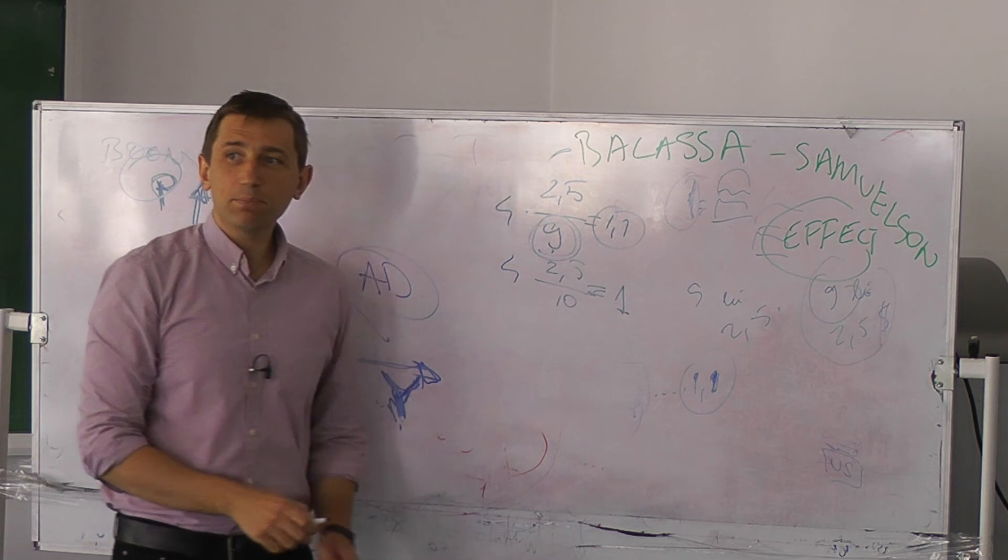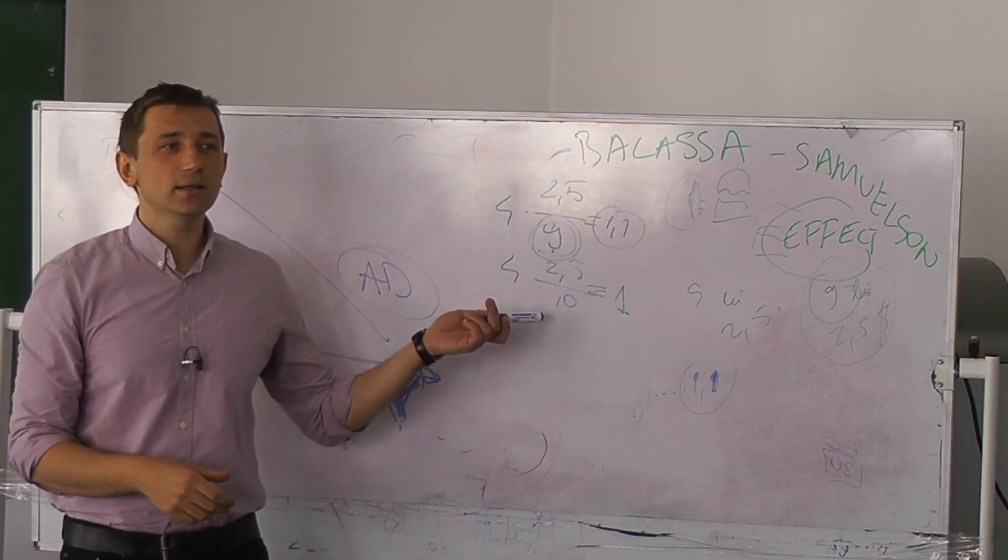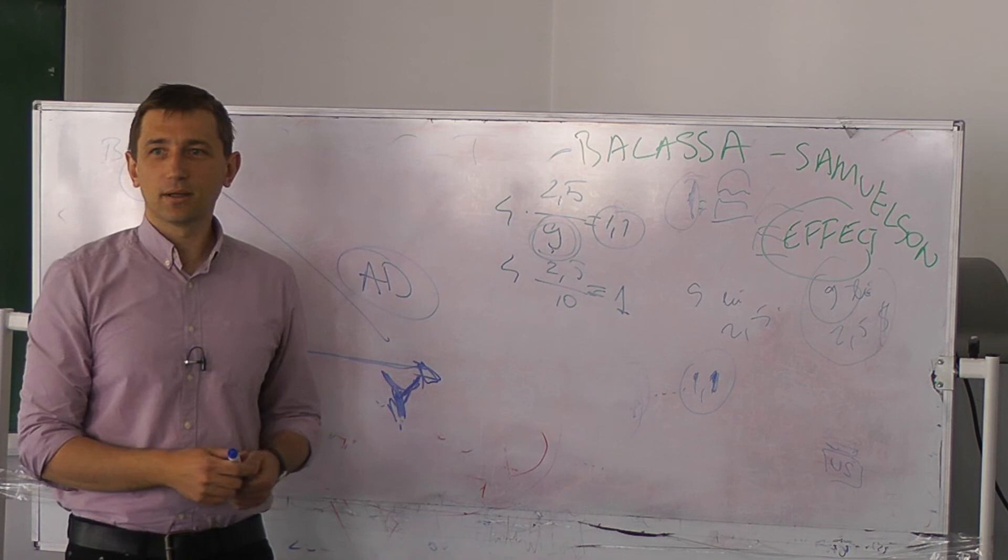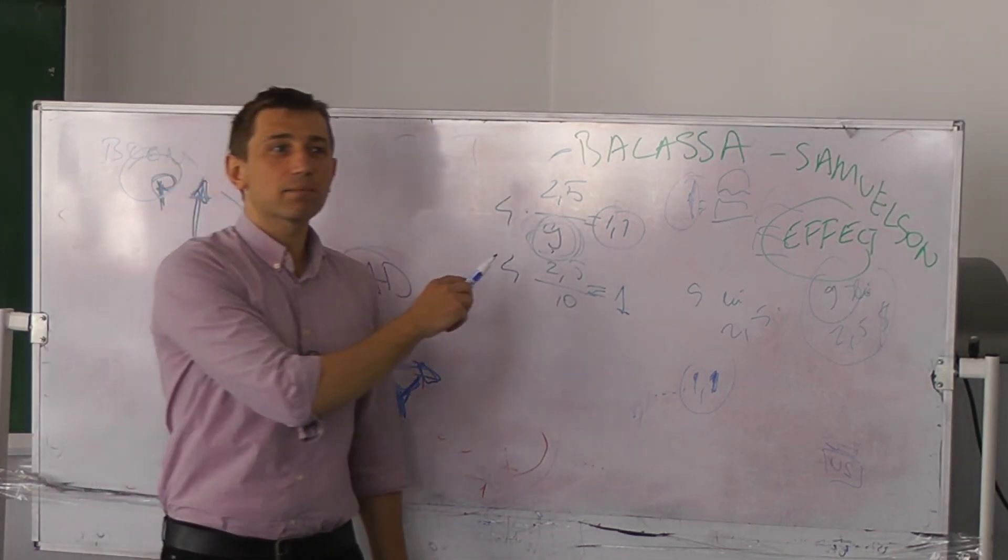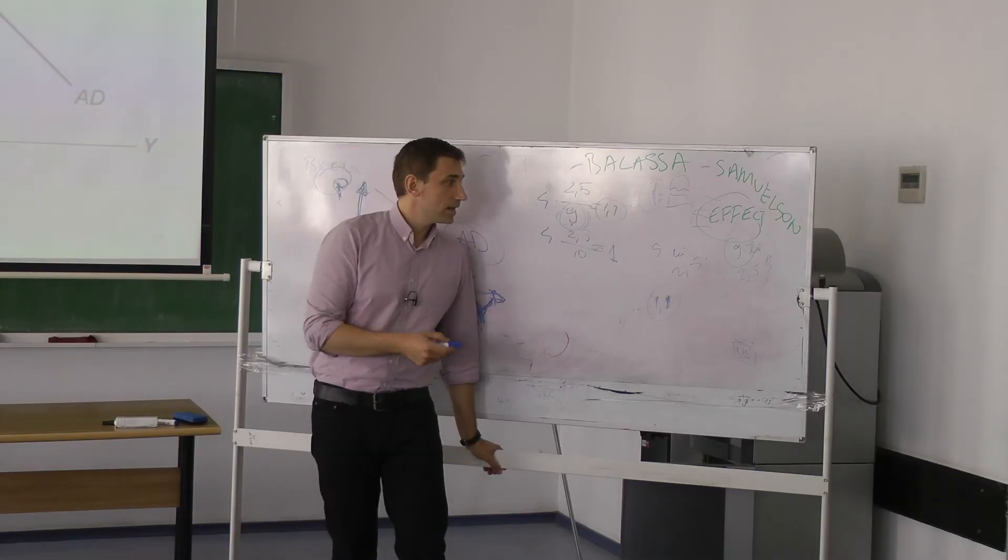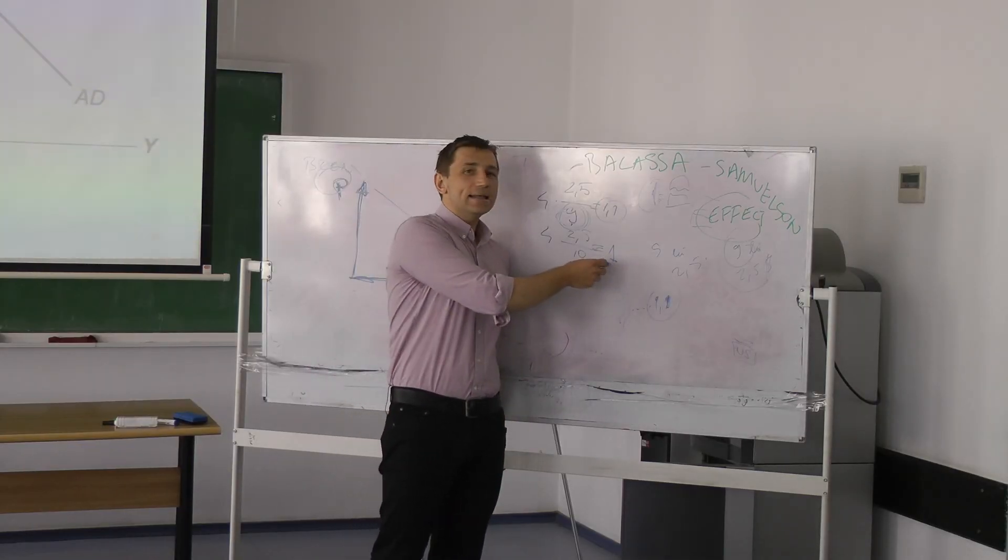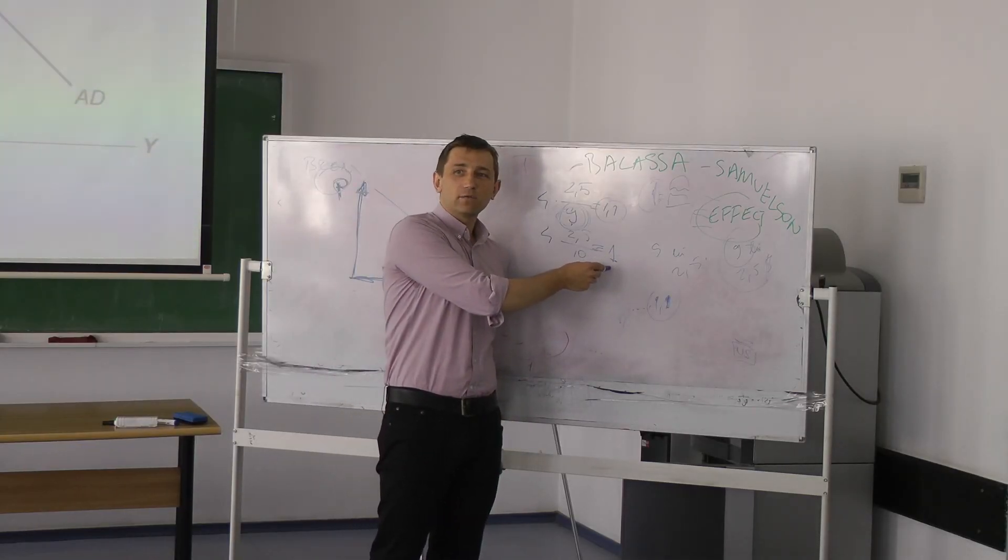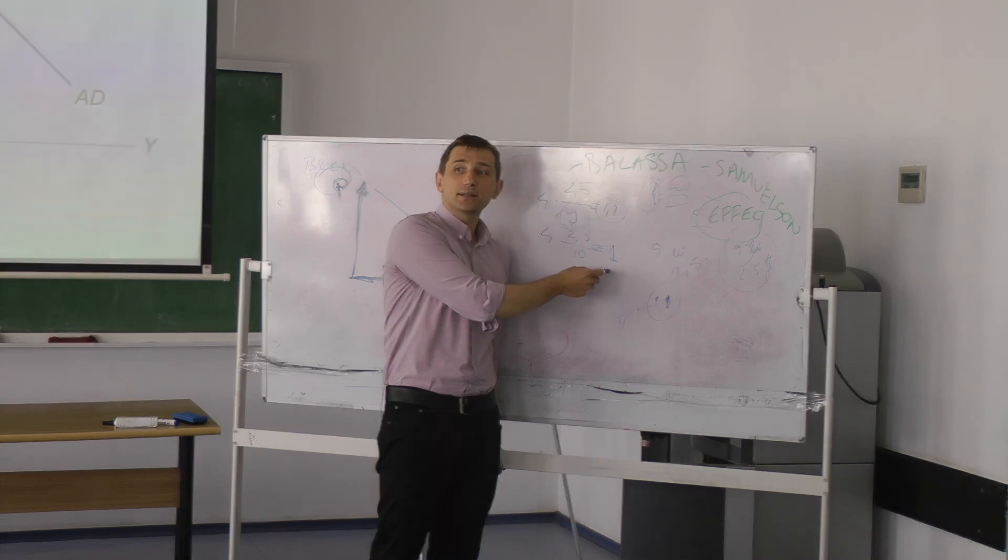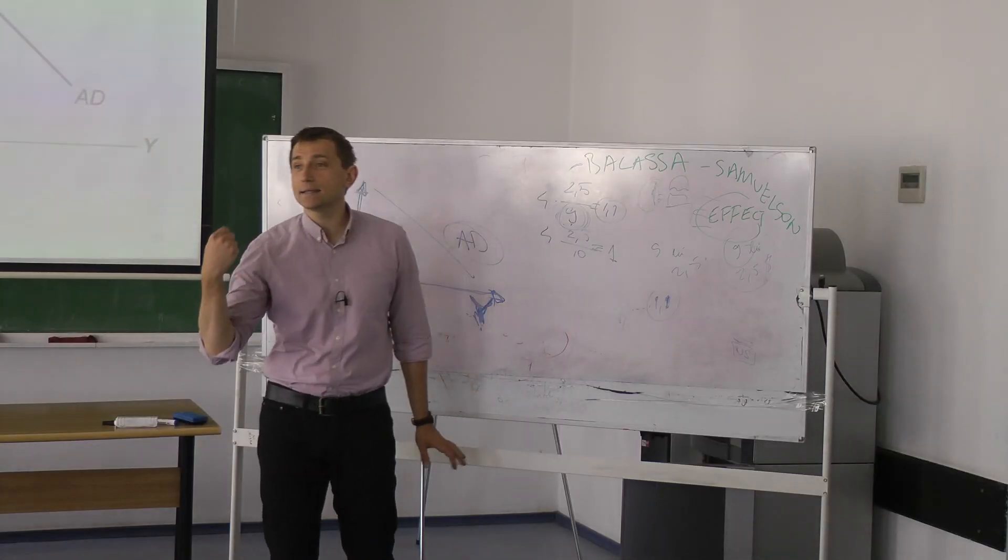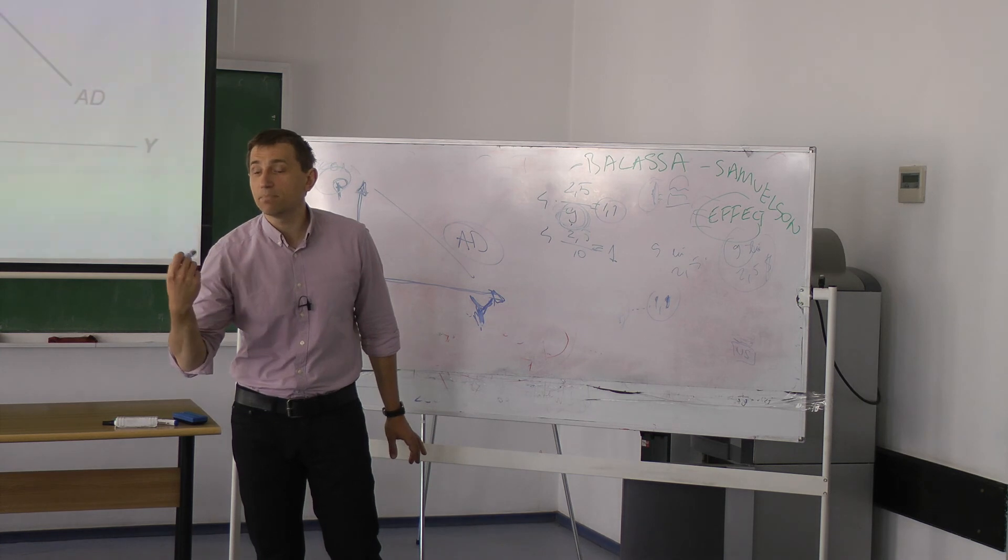What happened with the real exchange rate? Appreciated or depreciated? Because inflation in Romania made the Big Mac more expensive. Yes, but if you look here, there are less national units for one foreign unit, which means real exchange rate appreciated. The money will buy less in Romania. The same money will buy less, which means it's an appreciation.